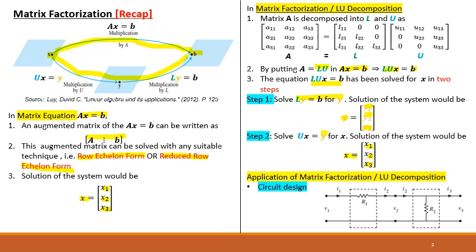The question is why we use LU decomposition, a two-step method, instead of the matrix equation method, which is a single-step method. The answer is that LU decomposition is used in applications where the output of one system becomes the input of the next system — for example, circuit design, where two circuits are connected in series so that the output of one circuit becomes the input of the next.